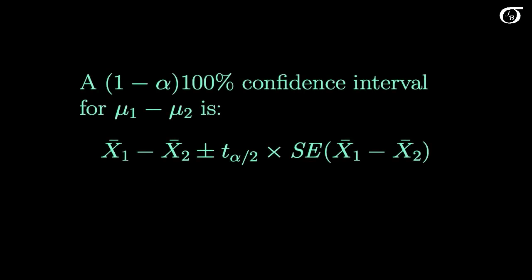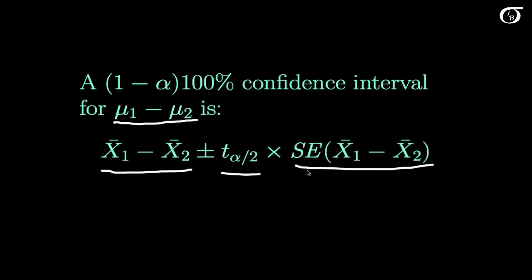We have our 100 times (1 minus alpha) percent confidence interval for the difference in the population means. It takes a similar form to things we've seen before: we take the best estimator of the difference in population means — x1 bar minus x2 bar — and add and subtract a t value times the standard error of that estimator. This formula is very similar to what we did in the one-sample problems.